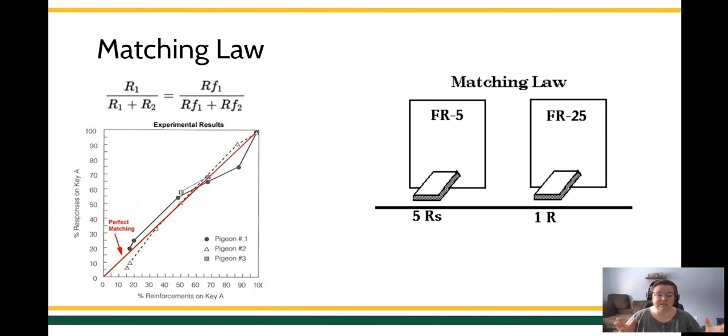Now, you can see one lever, the left lever, the FR-5 lever, is going to pay off after you press the lever five times. The other lever, the FR-25 lever, pays off if you press it 25 times, which means you have to work five times as hard to get the same reinforcer. So where is responding going to go? Which lever is the organism going to push?